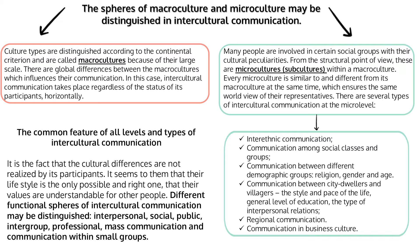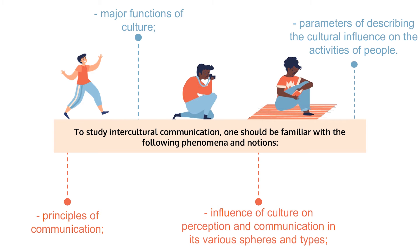Within each of these spheres, intercultural communication is carried out at different levels. There are several types at the micro-level: inter-ethnic communication, communication among social classes and groups, communication between different demographic groups such as religion, gender, and age, communication between city dwellers and villagers, style and pace of life, general level of education, type of interpersonal relations, regional communication, and communication in business and culture. The common feature of all levels and types is that cultural differences are not realized by participants. It seems to them that their lifestyle is the only possible and right one, and that their values are understandable and acceptable for other people. An ordinary person begins to think about the reasons for communicative failure only when meeting representatives of a different culture and finding that original models of behavior do not work.